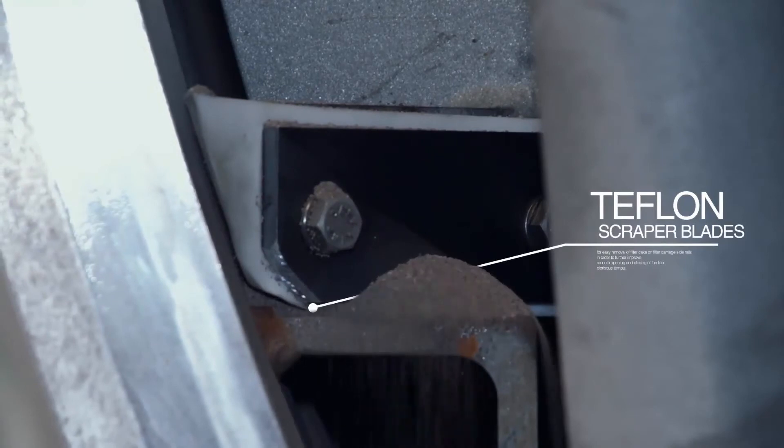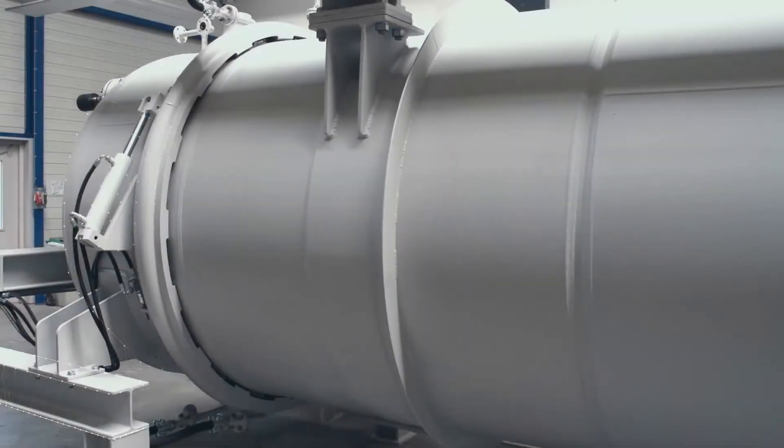Teflon scraper blades make for easy cake removal on the filter cartridge or shell guiding rails.